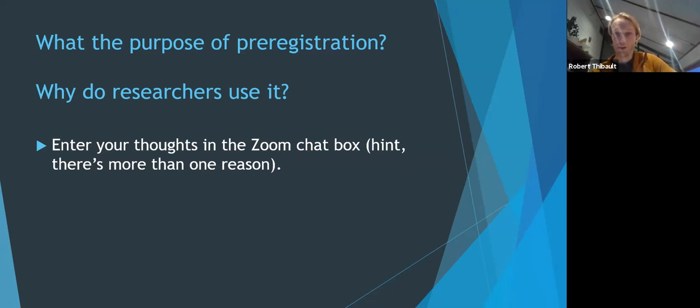To get feedback before starting. So yeah, pre-registration is useful for that because it's kind of a public document that you can get feedback from. To make the garden of analytical forking paths smaller. I would say, yeah, you're choosing one of those forking paths ahead of time is what you're doing. You're not making those choices in the forking paths of your analysis. You're not making them dependent on the data. You're making them ahead of time, which is important. And to avoid publication bias. Yeah. So these are all reasons to use pre-registration.